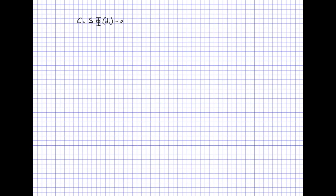Let's see how we can compute the delta and the gamma of a European call. From financial mathematics, we know that the value of a European call at time zero is: S times the CDF of a standard normal Φ computed in D1, minus e to the minus r capital T, where capital T is maturity, K is the strike price, times Φ(D2), the CDF of a standard normal computed in D2. The quantities D1 and D2 are defined as we see on the screen — these are the standard definitions we recall from our course in financial mathematics.